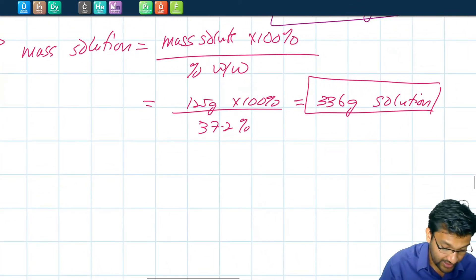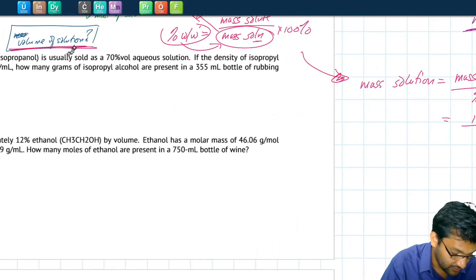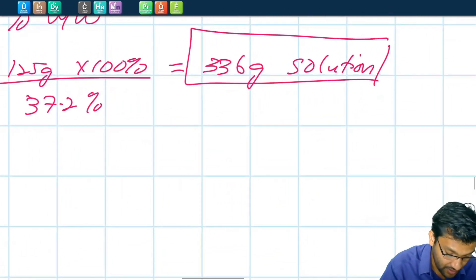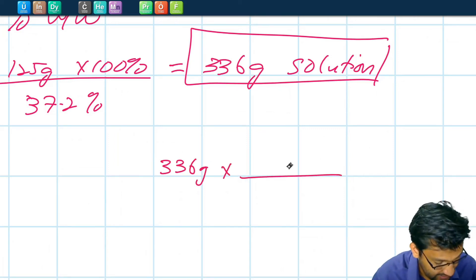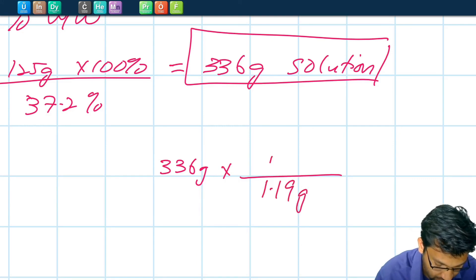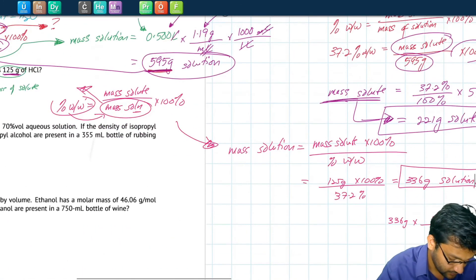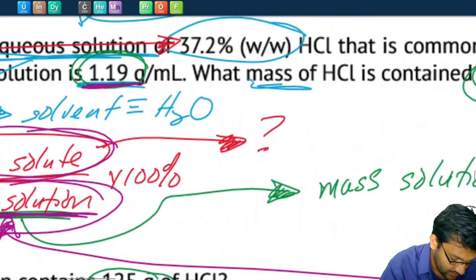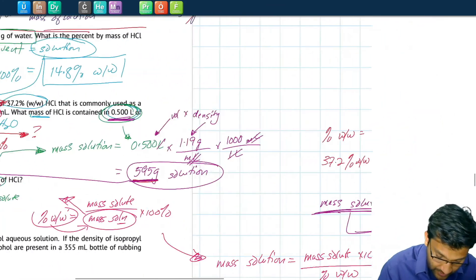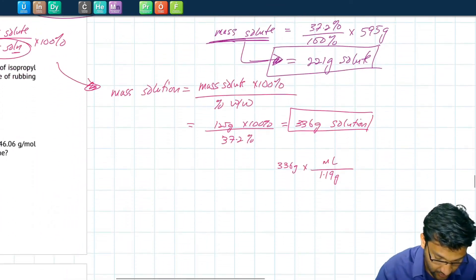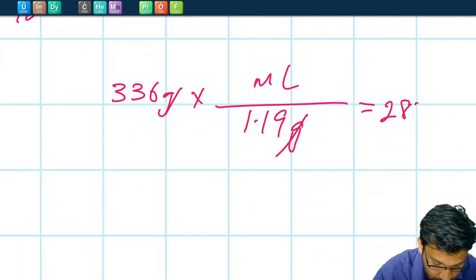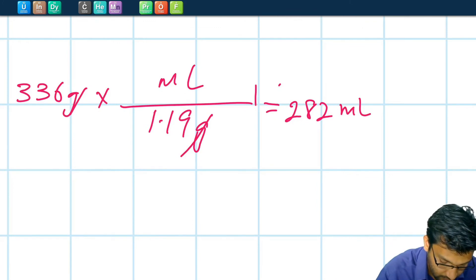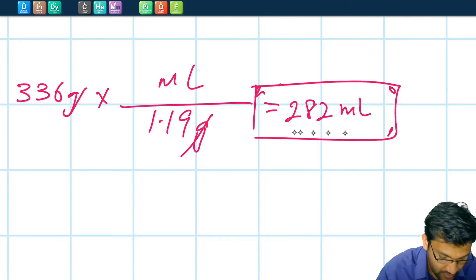But we're looking for volume of solution, not mass. If we take our mass and divide it by the density — 1.19 grams per milliliter from the previous question — we can convert mass into volume. Dividing 336 grams by 1.19 grams per milliliter gives us 282 milliliters. That is our answer for number 36.